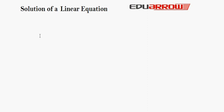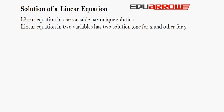Every linear equation in one variable has a unique solution. But a linear equation in two variables has two solutions, one for x and one for y. To summarize: linear equation in one variable has a unique solution, and linear equation in two variables has two solutions, one for x and one for y.